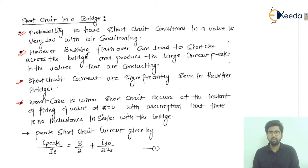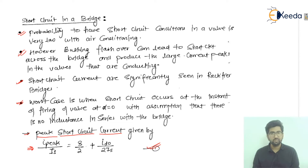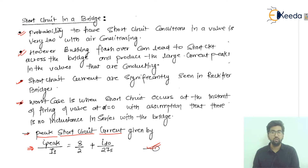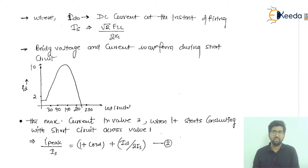The peak short circuit current formula is: i_peak / is = 3/2 + id₀ / (2·is). This relation is found from derivation — we are not going through the derivation, just concentrating on the important points. So: i_peak / is = 3/2 + id₀ / (2·is).